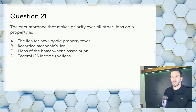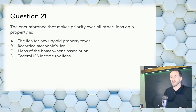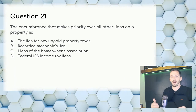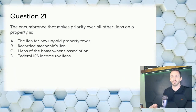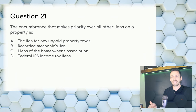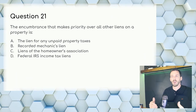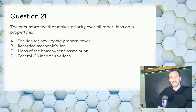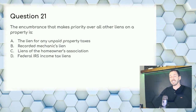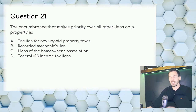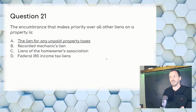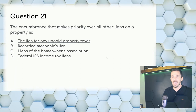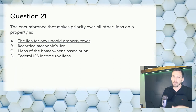Question 21: The encumbrance that takes priority over all other liens on a property — property taxes are always number one, except for foreclosures. If foreclosure were an answer it would be correct, but here: Answer: A — the lien for any unpaid property taxes.